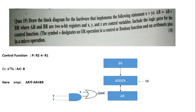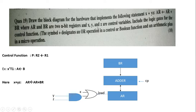This video is for solving a previous year university question asked for 10 marks: draw the block diagram for the hardware that implements the following statement — x plus yz, colon, AR implies AR plus BR — where AR and BR are two n-bit registers and x, y, and z are control variables. Include the logic gates for the control function, where the symbol plus designates an OR operation in the control part.